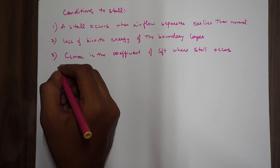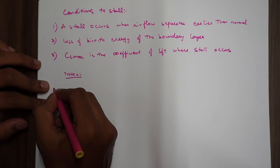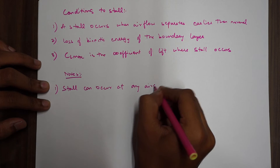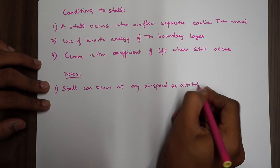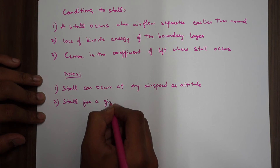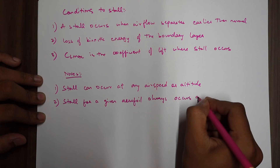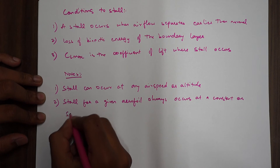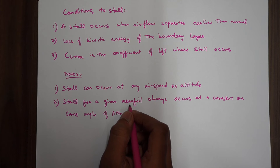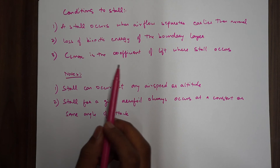A few important points: First, stall can occur at any airspeed or altitude — this is important. Second, for a given aerofoil, stall always occurs at a constant or the same angle of attack. So stall will occur at the same angle of attack for a given aerofoil.